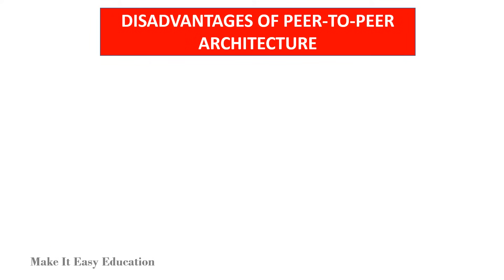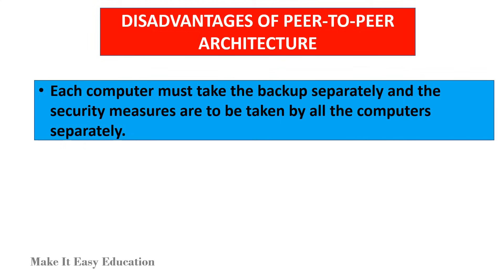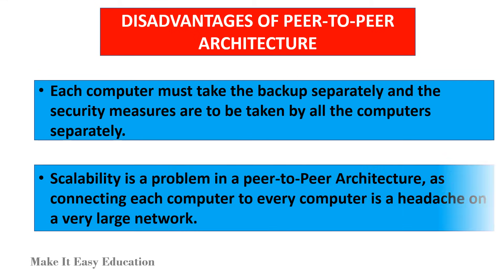Disadvantages of peer-to-peer architecture: each computer in the network has to take the backup separately, and the security measures are to be taken by all the computers separately. Scalability is also a problem, as connecting each computer to every computer is a headache on a very large network.